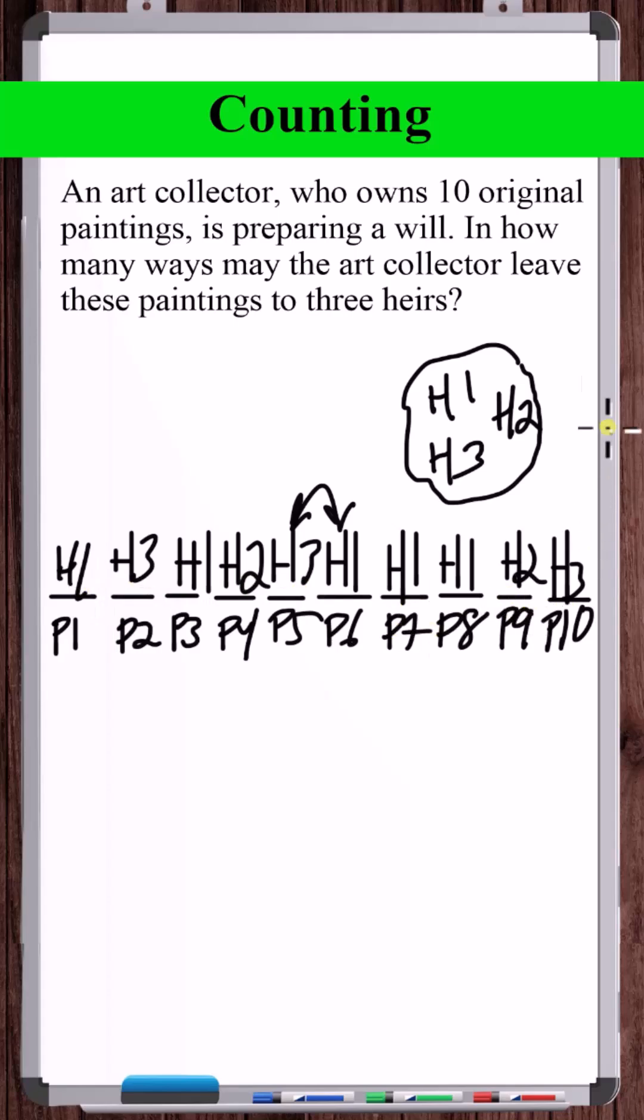We're counting the number of ways we can assign these three heirs to these 10 paintings with repetition. Heir one could get all 10 paintings maybe, but we care about order. So permutations with repetition, you just say how many people are in the group you're pulling from and how many slots are there? Three to the 10th. There's three to the 10th different ways you could distribute these 10 paintings to the three heirs.